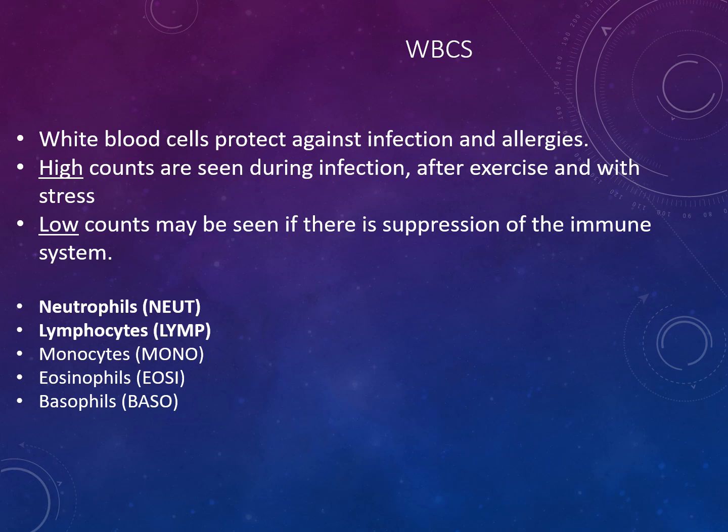White blood cells are also measured. White blood cells protect against infection and allergies. High counts are seen during an infection, after exercise and with stress. Low counts can be seen after suppression of the immune system. The white blood cells involved are neutrophils, lymphocytes, monocytes, eosinophils and basophils. These are different types of white blood cells in the blood, usually called a differential. In conjunction with the total white cell count, the levels give information about the immune system. The neutrophils and lymphocytes are the most important levels to measure, while the other three types are less significant and often measured together.